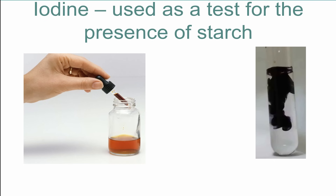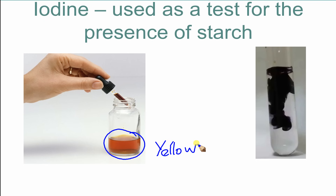As you can see here, iodine normally is this sort of orangey-yellow colour — typically we say that it's yellow. And when iodine is dropped onto something which is starchy, we get a very dark blue-black colour. This is known as a positive test for starch.